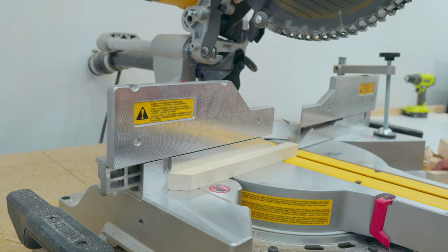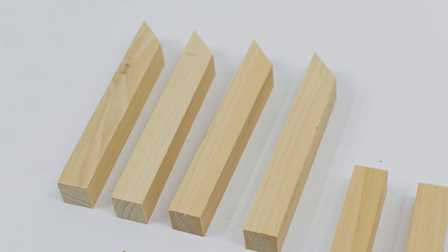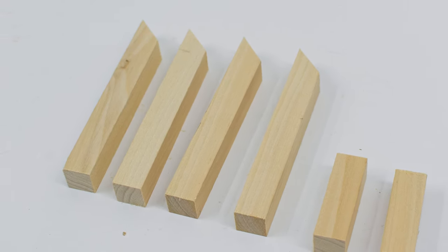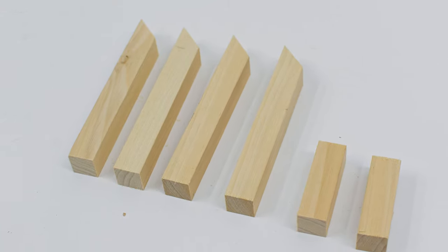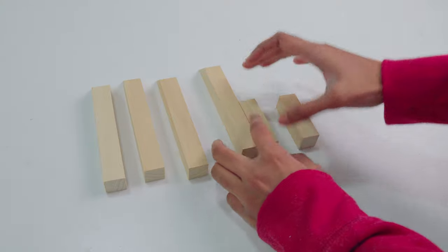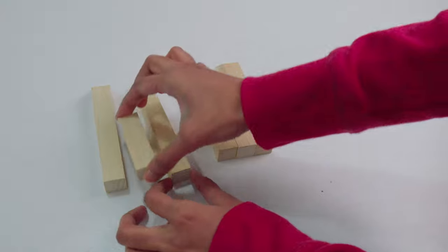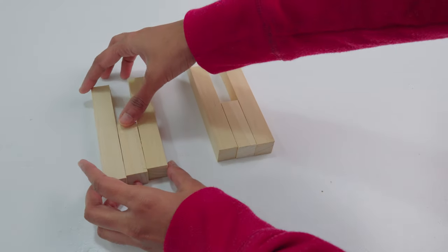You need to cut four pieces of five and a half inches long with a 45 degree angle on one end and two pieces of two and a half inches. Sandwich the small pieces between the long ones, aligning the straight ends and glue them together. You need to make two of them like this.